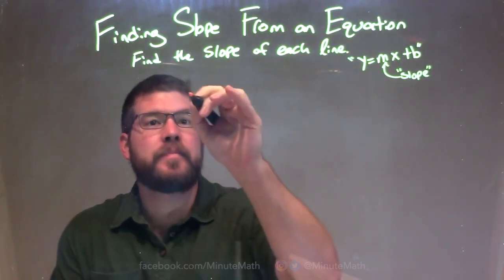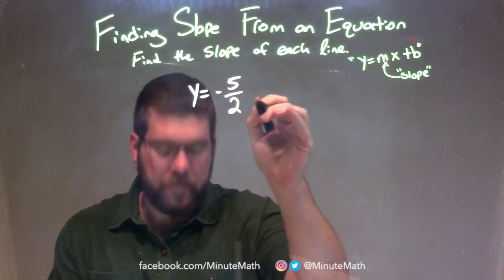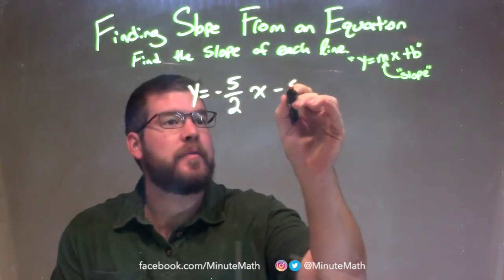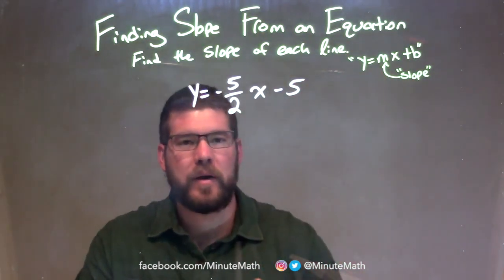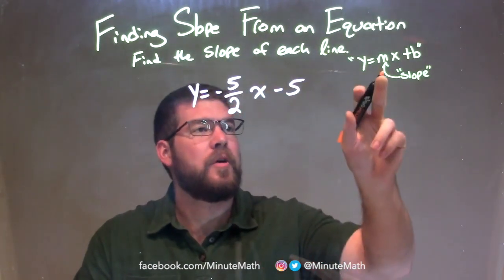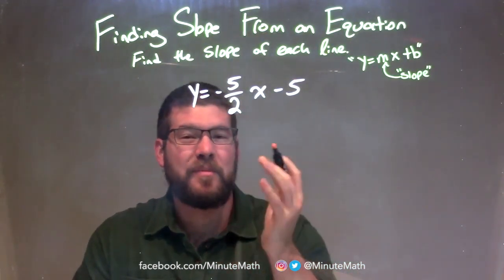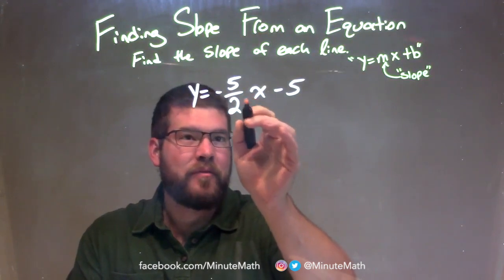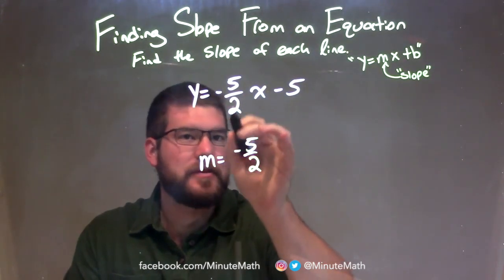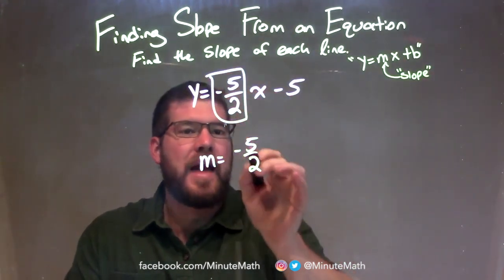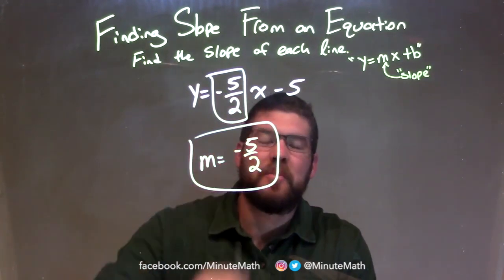If I was given this equation, y equals negative 5 halves x minus 5, the key here is I want to see if I can get it into what we call slope-intercept form. Then we can identify the slope. Our slope is what's right in front of x, our m value. Since we have this in slope-intercept form, it's pretty easy. Our slope is written right in front of our x — it's the coefficient of x — and that is m equals negative 5 halves. That is our slope, and our final answer is negative 5 halves.